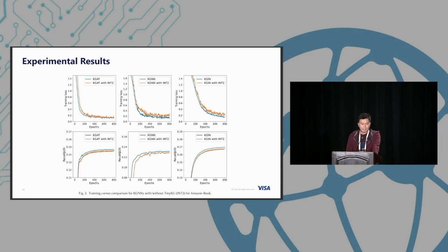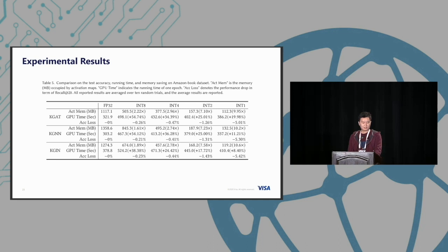This is our training curve. The blue curve is the original implementation in fp32, and the orange color is our implementation quantized to int2. They almost have a similar training curve. As the epochs go, we can see they almost converge to similar performance because we don't change any architectures, we just change the memory routine for how to store it in memory.